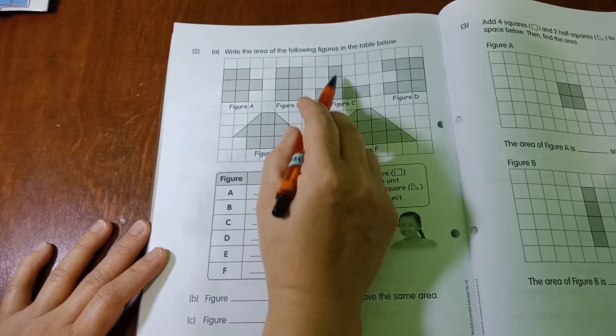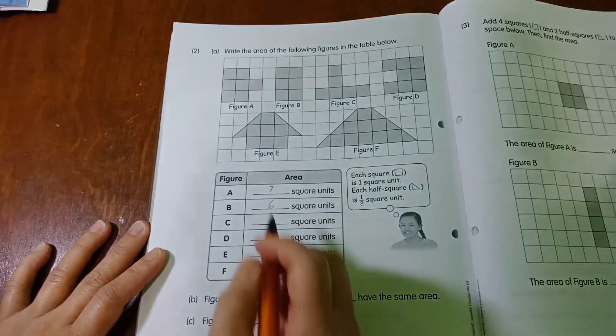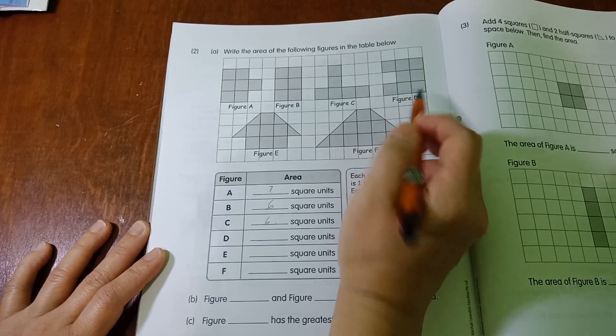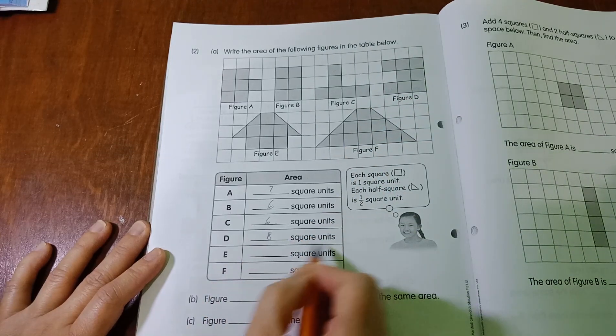What about C? 1, 2, 3, 4, 5, 6. Now what about D? 1, 2, 3, 4, 5, 6, 7, 8. 8 square units for D.